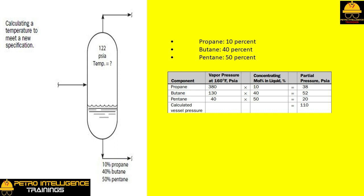Suppose we raise the drum temperature to 160 degrees Fahrenheit and repeat our bubble point calculation. Apparently our guess of 160 degrees Fahrenheit was wrong. If we had guessed the correct temperature, the calculated vessel pressure would have been 122 psia, not the 110 psia. Try to work this problem yourself by guessing a new flash drum temperature. The answer is 168 degrees Fahrenheit.